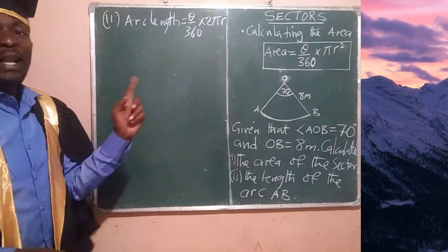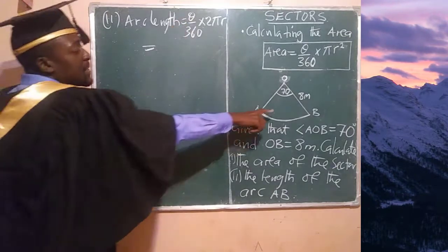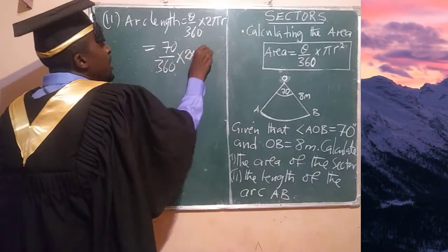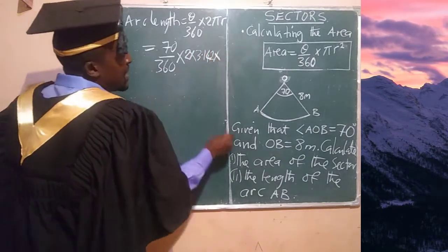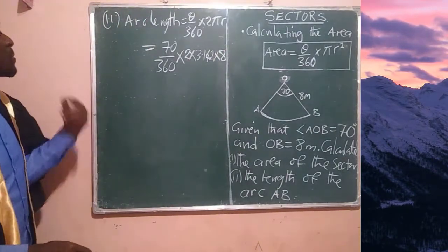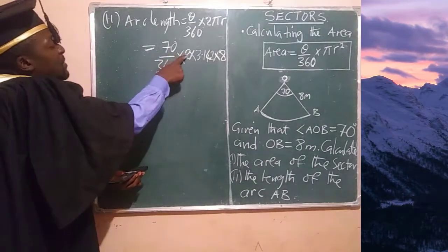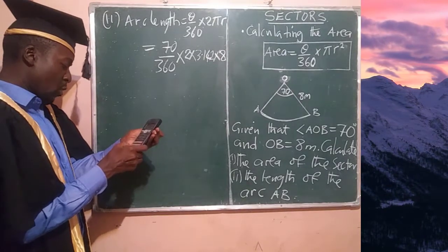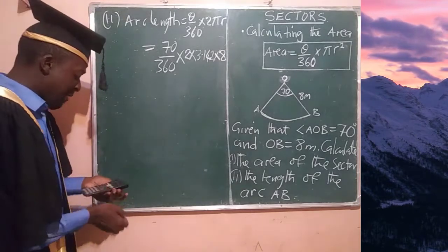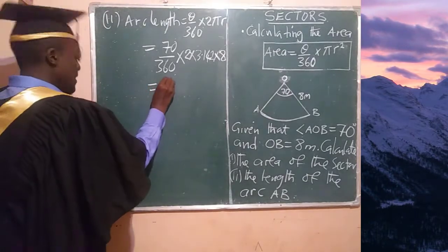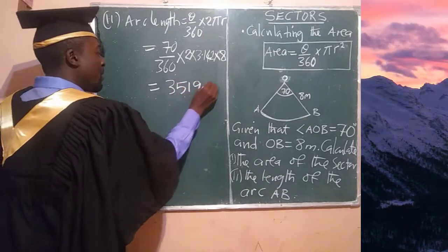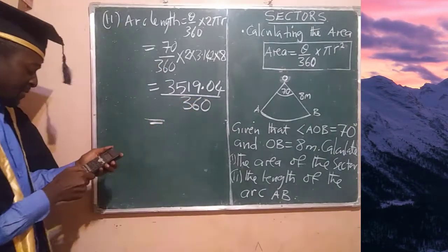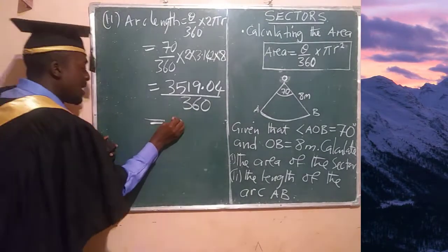Substituting our values, we have 70 over 360 times 2 times 3.142 times 8. Using a calculator, we multiply 70 times 2 times 3.142 times 8 to get 3519.04, then divide by 360.